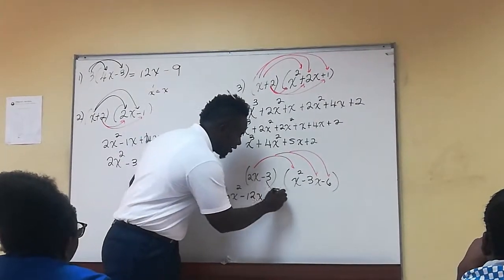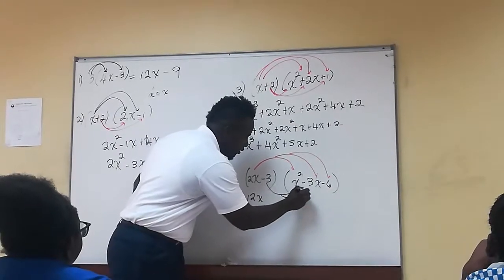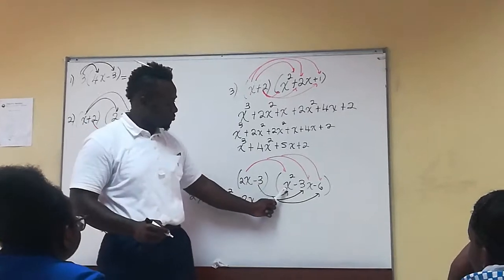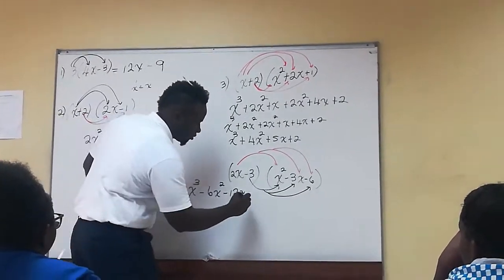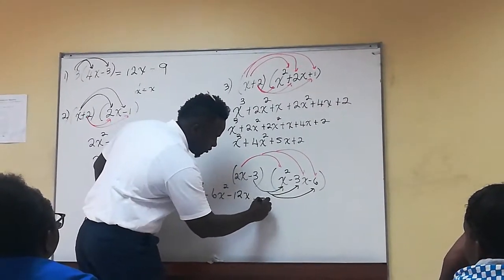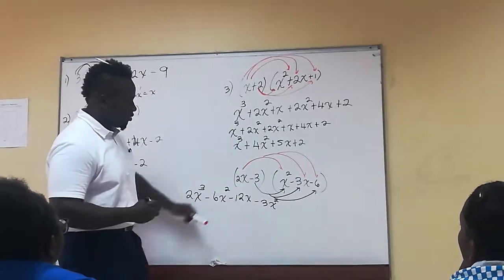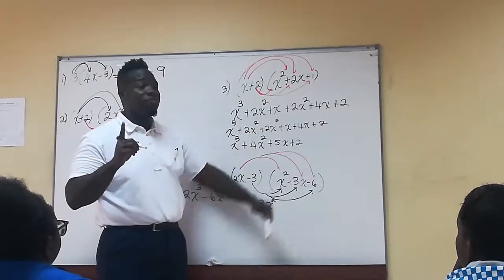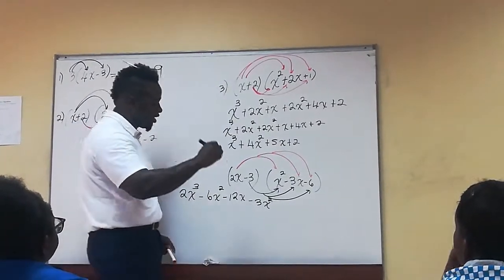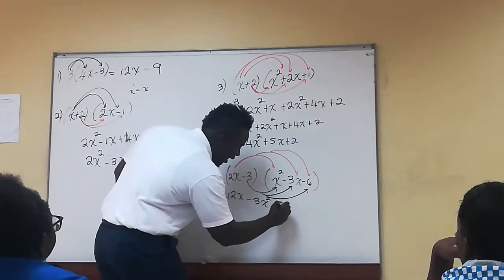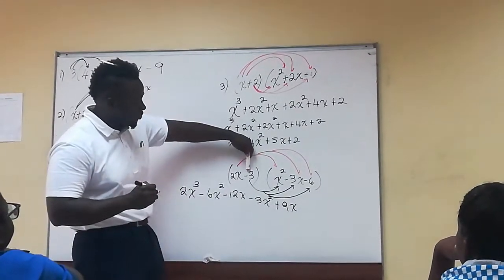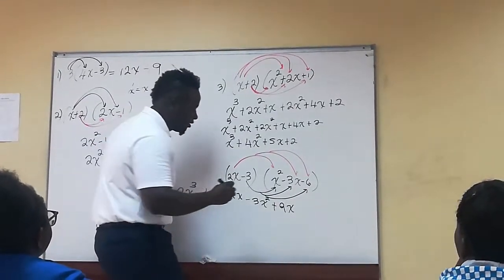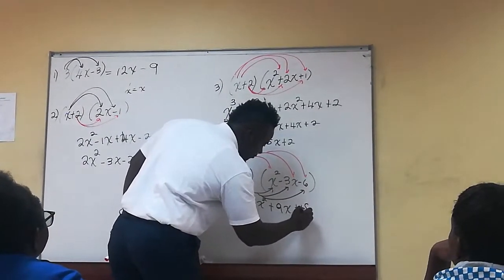Now we're going to go to the second element, minus 3, and multiply it by everything in the second bracket. Minus 3 times x squared gives minus 3x squared. Then minus 3 times minus 3x — positive — gives 9x. And minus 3 times minus 6 — positive — gives 18.